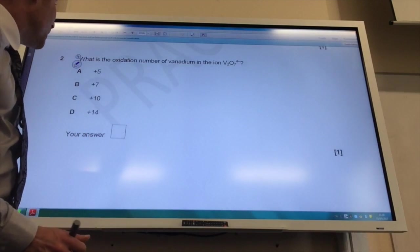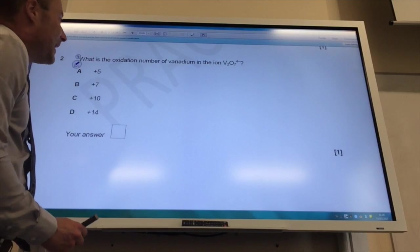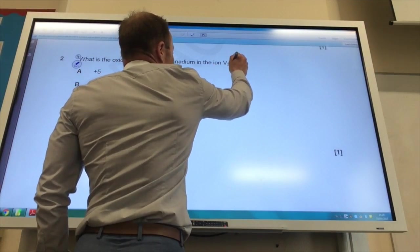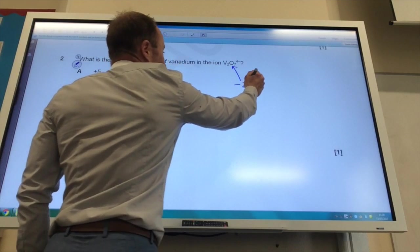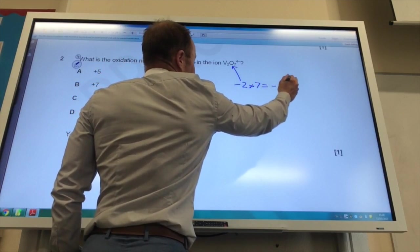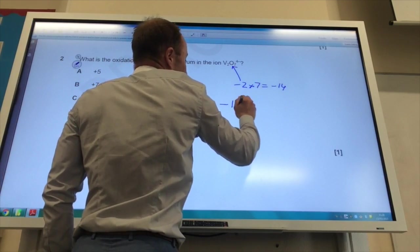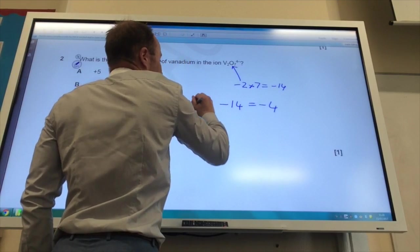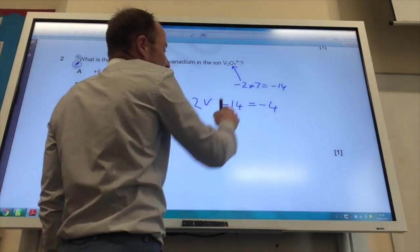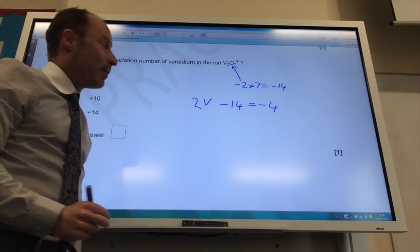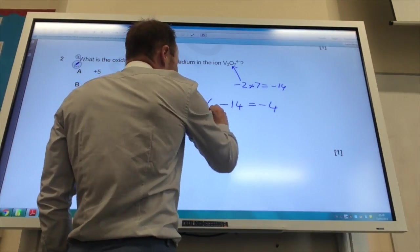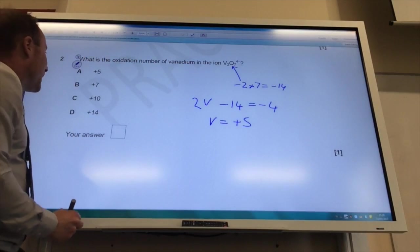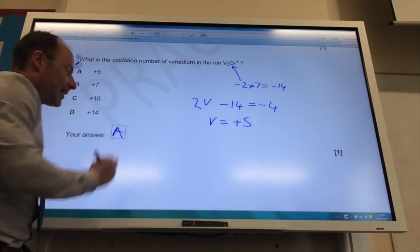Question 2. What is the oxidation number of vanadium in V2O7 minus 4? Well, we know that oxygen is minus 2, and I've got 7 of them, so that comes to minus 14. The overall charge on the ion is minus 4, and I've got two vanadiums. So whatever vanadium is, minus 14, gives me minus 4. So vanadium has got to be plus 5 to get that to work. The answer to 2 is A.